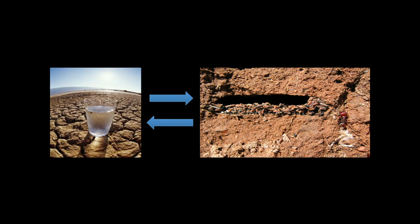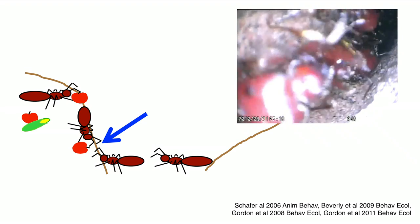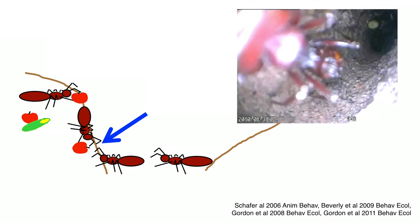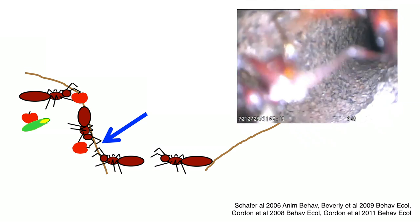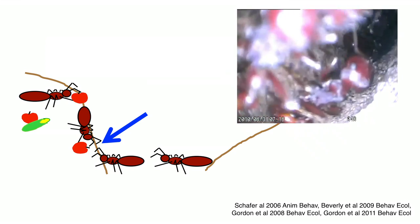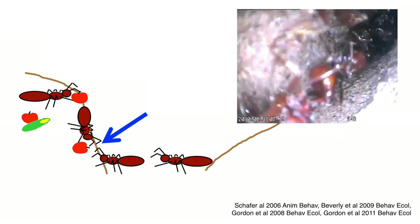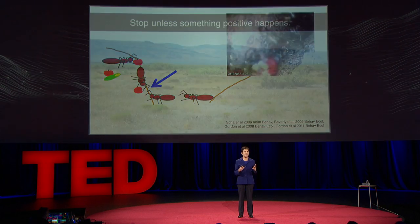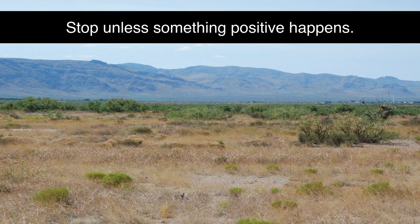In the desert, operating costs are high because water is scarce. The seed-eating ants I study in the desert have to spend water to get water — an ant foraging outside, searching for seeds in the hot sun, just loses water into the air. But the colony gets its water by metabolizing the fats out of the seeds they eat. So in this environment, interactions are used to activate foraging. An outgoing forager doesn't go out unless it gets enough interactions with returning foragers. The returning foragers go into the tunnel into the nest and meet outgoing foragers on their way out. This makes sense because the more food there is out there, the more quickly the foragers find it, the faster they come back, and the more foragers they send out. The system works to stay stopped unless something positive happens, so interactions function to activate foragers.